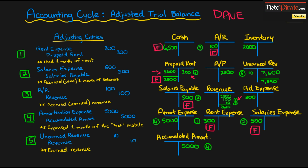We need to look at amortization expense, which has a final balance of $5,000 as a debit — remember that all expenses are debited. Accumulated amortization is a contra-asset account; remember that it is always a credit when you increase a contra-asset account, and the final balance is $5,000. Finally, we get to our unearned revenue adjusting entry, which is a debit to unearned revenue, bringing the unearned revenue final balance down to $7,590 as a credit. Revenue is credited once more to give us a final balance of $2,610.